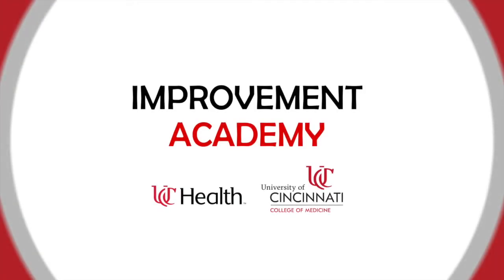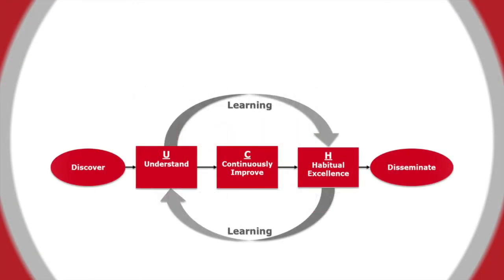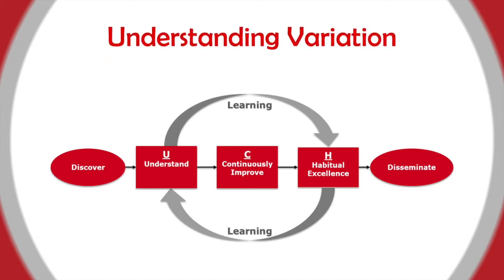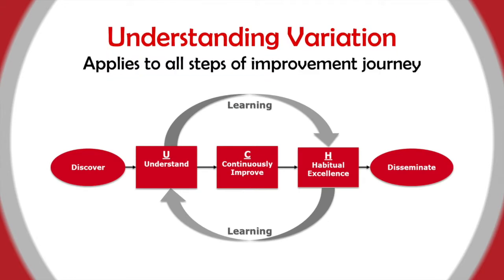Welcome to the UC Improvement Academy. Today we will talk about two types of variation: common cause and special cause. An understanding of variation is needed during all phases of the improvement journey, and it is especially important during the continuous improvement phase.